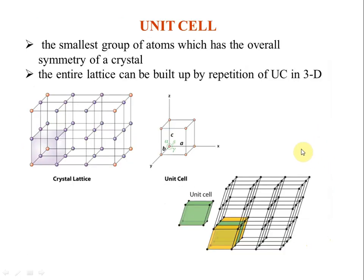The most important type of problems in solid state deal with unit cells. A unit cell is the smallest group of atoms that has the overall symmetry of a crystal — essentially the smallest repeating pattern. If a pattern can be further divided into a smaller repeating unit, that smaller unit is the true unit cell. The entire lattice can be built up by repetition of the unit cell in three dimensions.